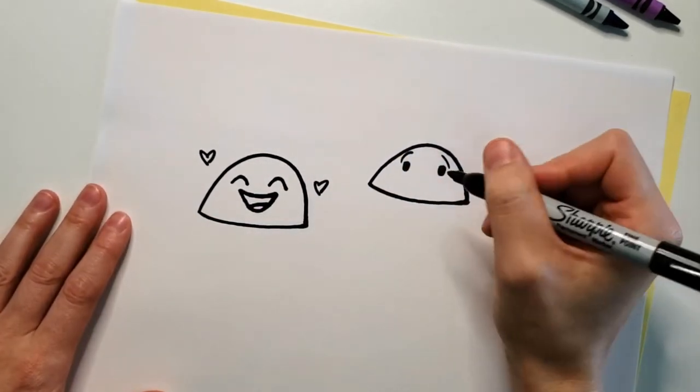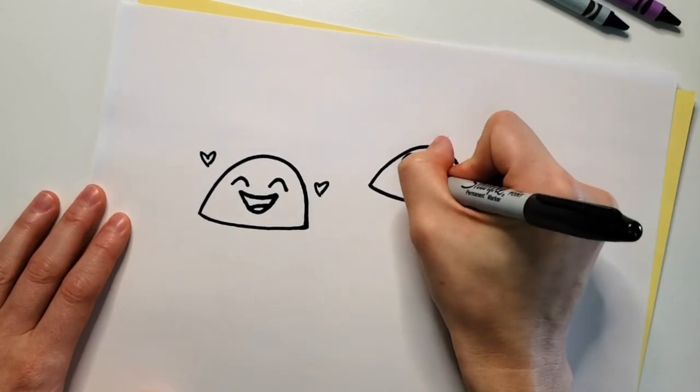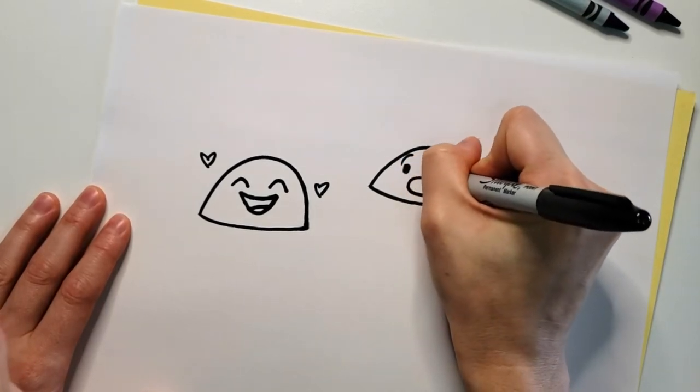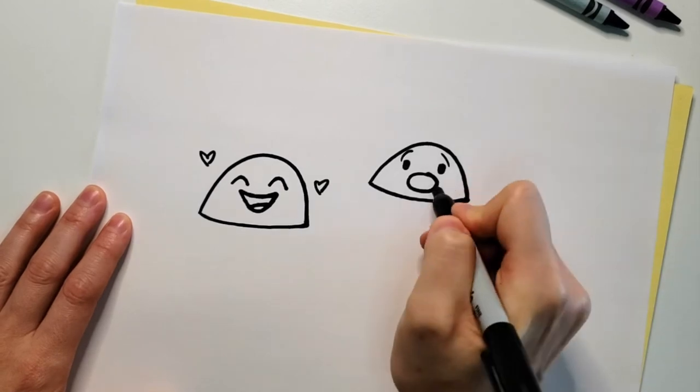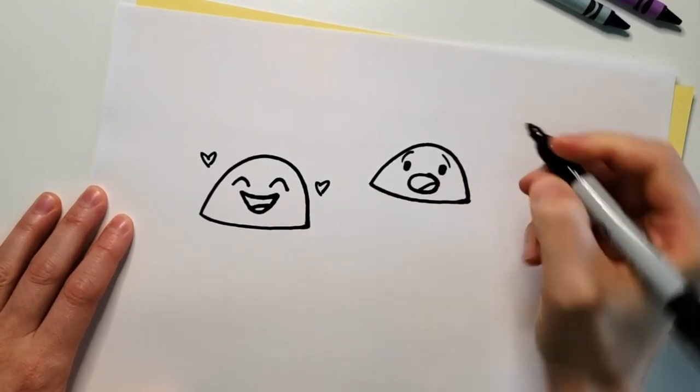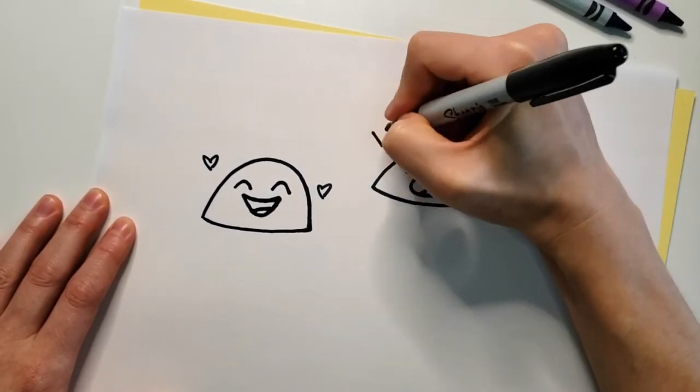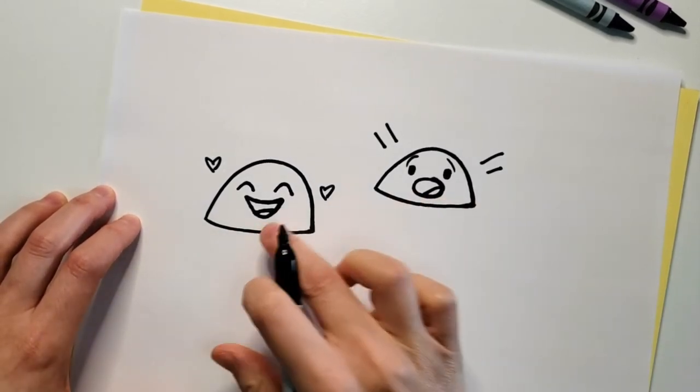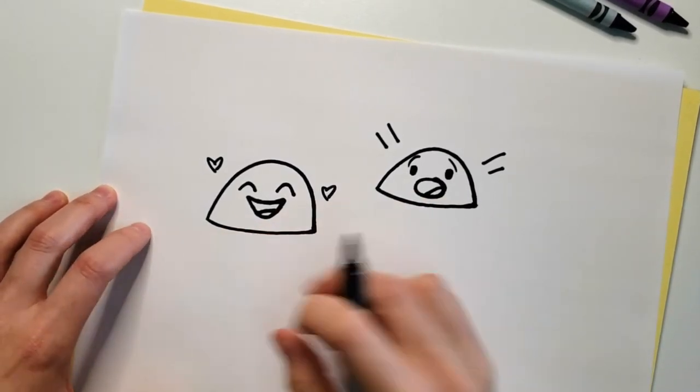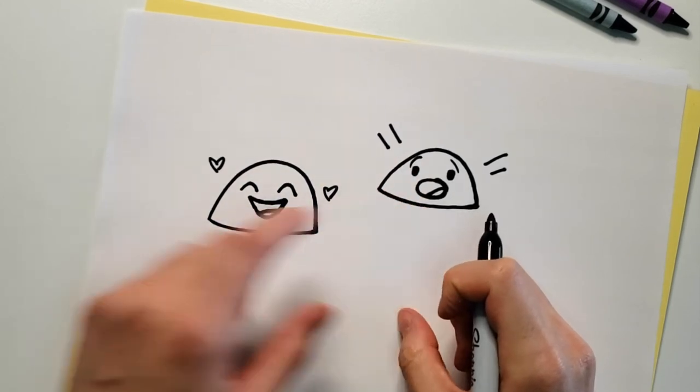Now let's do a shocked face, which will be a circle like this, and then a little tongue, and let's add some lines like this. So you can see how different you can make Bon Bon look just by changing the shape of the eyes and the mouth.